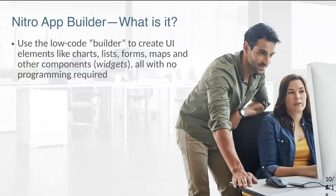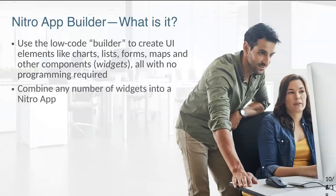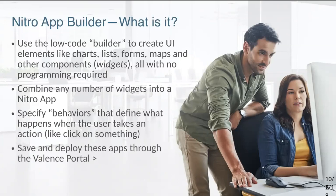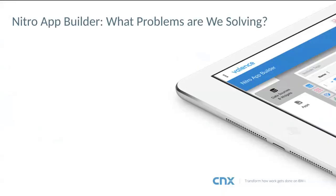The Nitro app builder is classified as a low-code app builder. You create user interface elements — charts, lists, forms, maps — we call all the visual components 'widgets,' and no programming is required. You can extend things with a bit of programming if you want, but it's not necessary. You combine one or more widgets into a final Nitro app, and you can create user interactions — called 'behaviors' — that define what happens when the user takes an action.